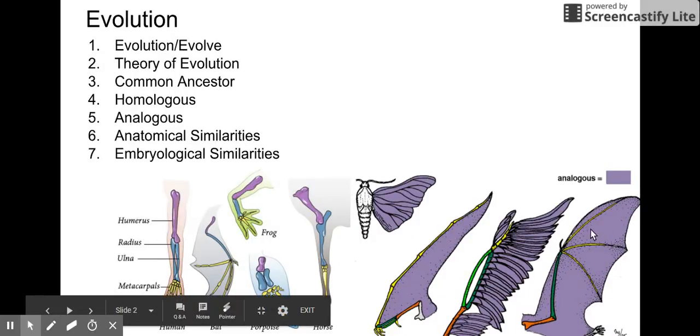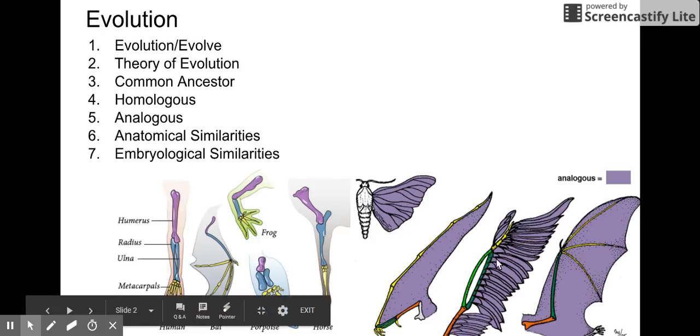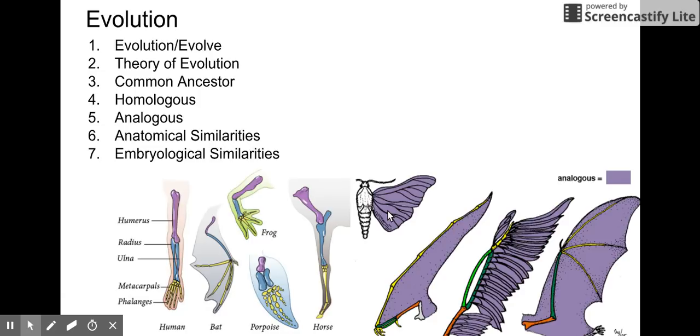On the right-hand side of the screen over here, we have another four organisms. These four do not share a common ancestor, but they do have common body structures. This is called an analogous structure. An analogous structure is going to be a similar structure based on an organism sharing a similar space in an ecosystem rather than having an actual common ancestor. These four different organisms do not share common anatomy. They just share a common place in the ecosystem. Analogous structures are going to be filling a similar place in an ecosystem.